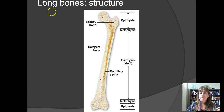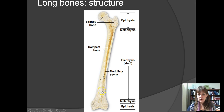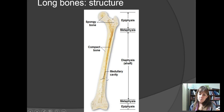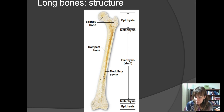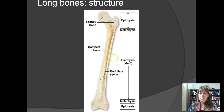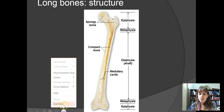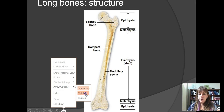Red bone marrow in the spongy bone — both in flat bones and long bones — helps make blood cells. The medullary cavity itself is filled with red bone marrow in infants, but in adults it switches over to yellow bone marrow, which is primarily involved in lipid storage.